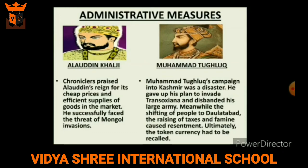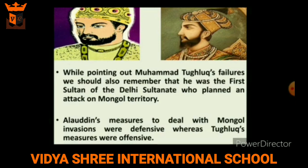Alauddin's administrative measures were quite successful, and chronicles praised his cheap and efficient supply of goods in the market. On the other hand, Muhammad Tughlaq's administrative measures were a failure. His campaign into Kashmir was a disaster; the shift of people to Daulatabad, the raising of taxes, and the famine in the Ganga-Yamuna belt led to widespread rebellion. Finally, the token currency had to be recalled. However, we should remember that Muhammad Tughlaq was the first Sultan of the Delhi Sultanate who planned an attack on Mongol territory.